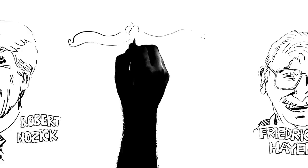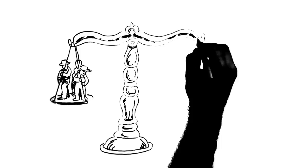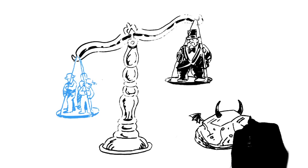On this view, which has been defended by libertarian luminaries like Robert Nozick and Friedrich Hayek, asking whether the distribution of wealth in a society is in accordance with social justice is like asking whether the color blue is heavy or whether a stone is moral. It simply doesn't make sense.